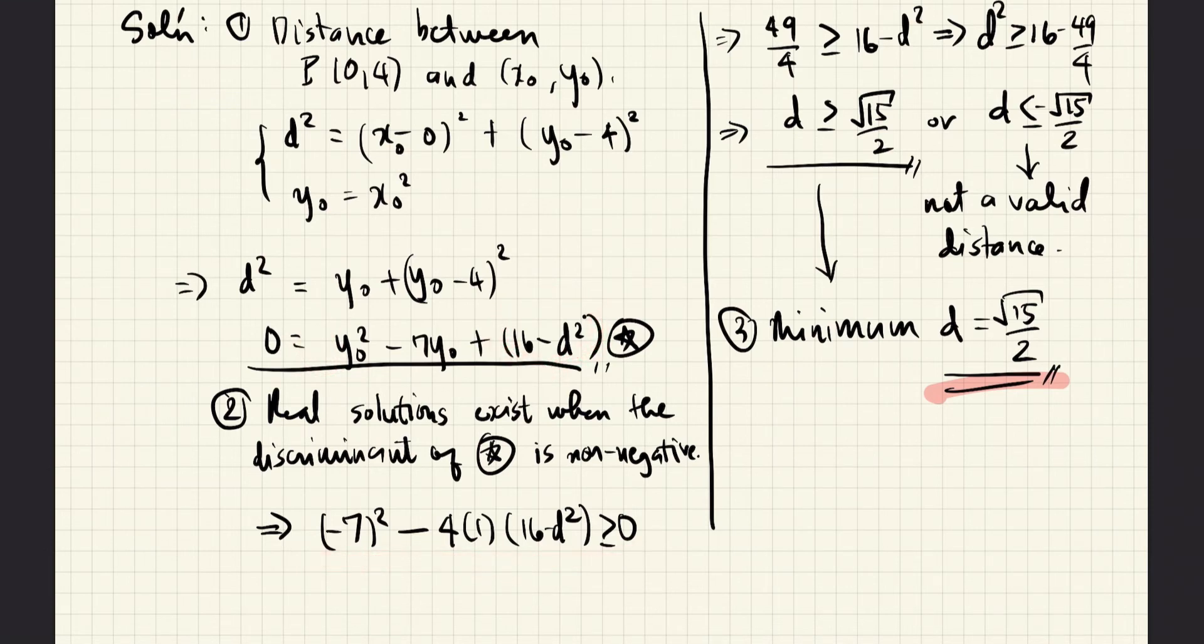We simplify this inequality and we obtain this, which can be rearranged to be this. Notice that the solution to this inequality are either this or this. However, this solution can be ignored because the distance between two points cannot be a negative number. And so, we ignore this solution.